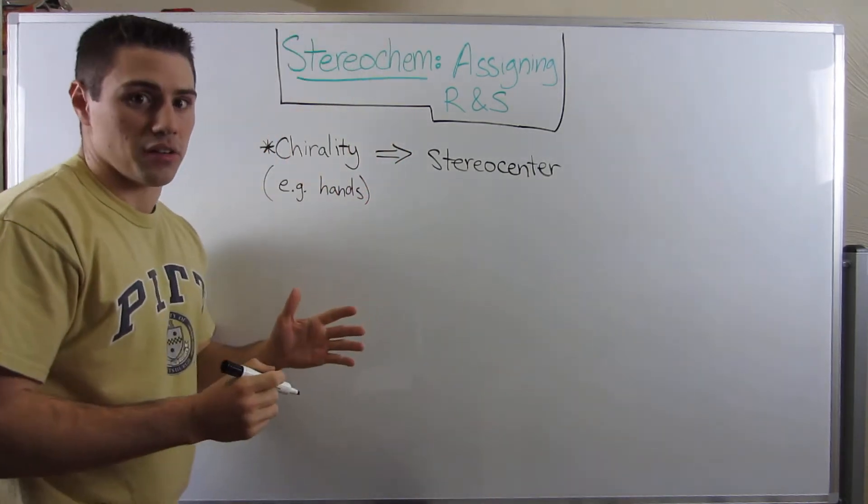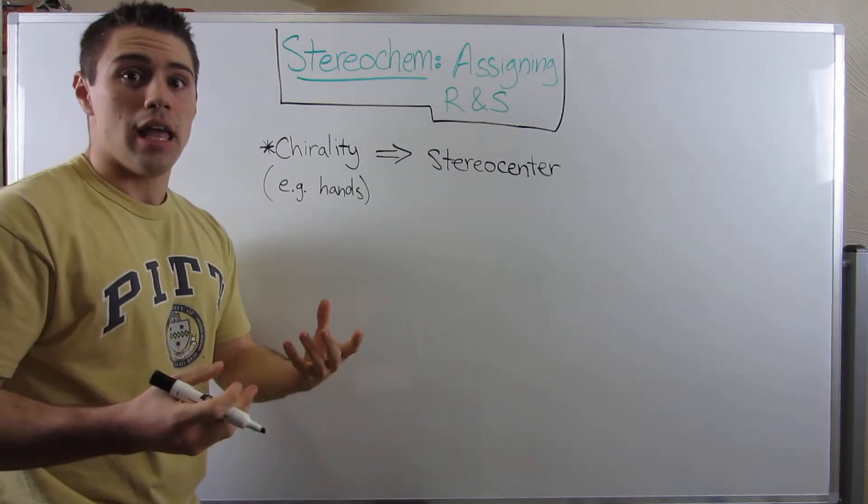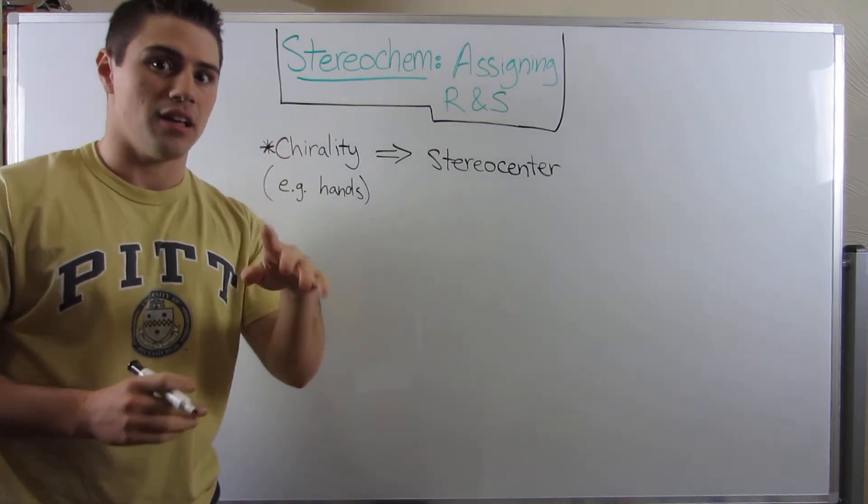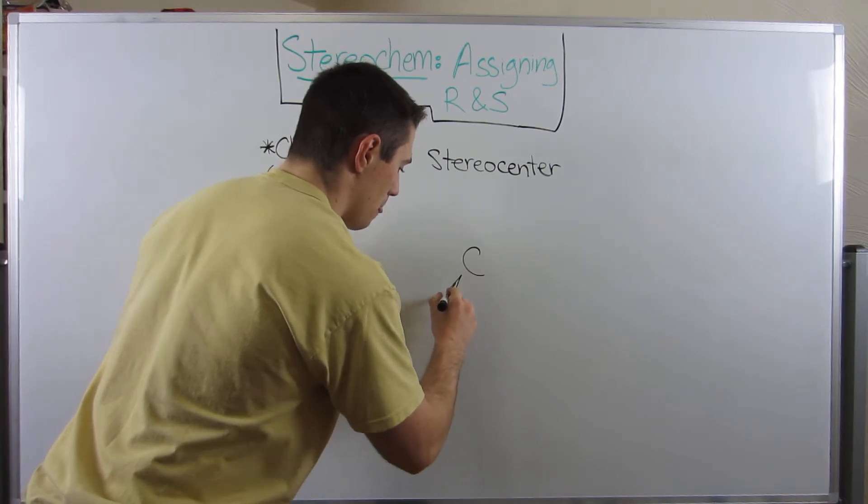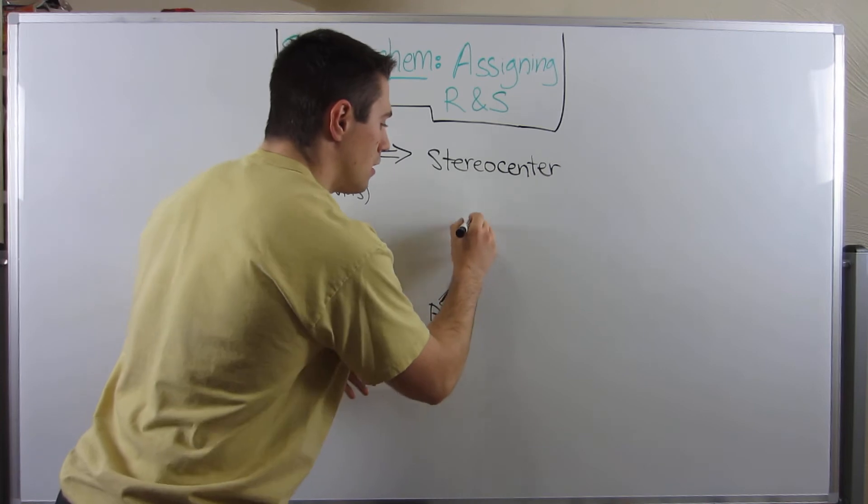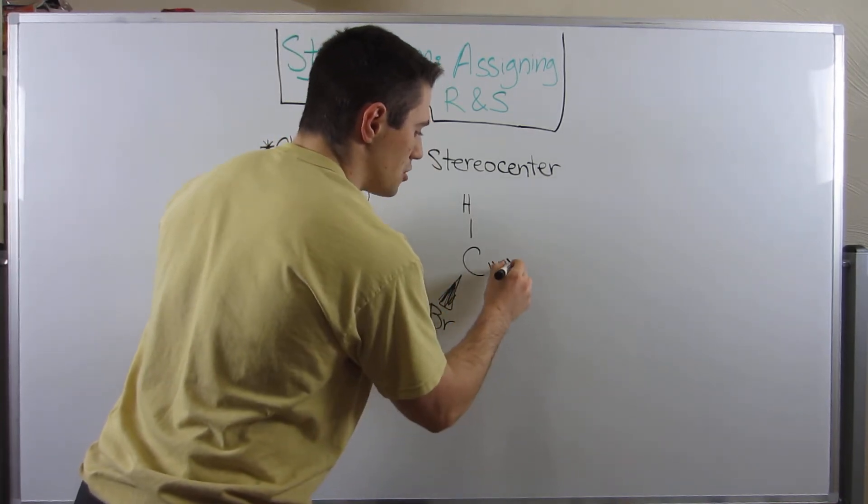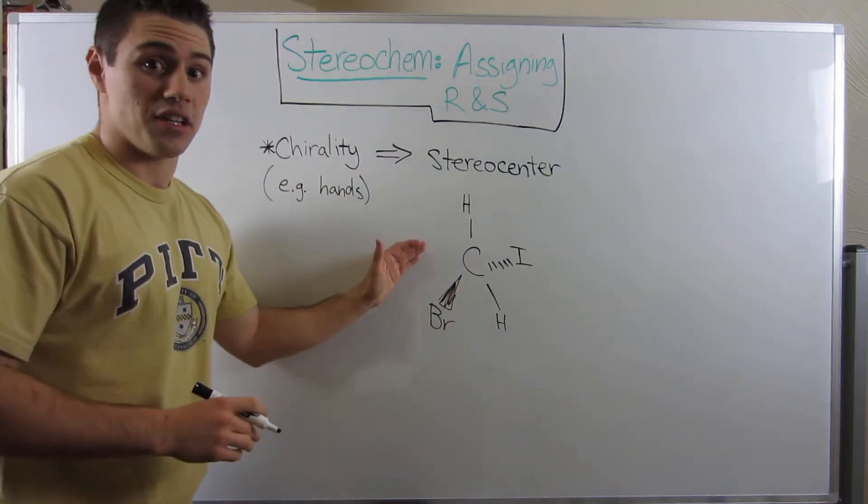So here's what a stereocenter is. A stereocenter is going to be a carbon attached to four different things. And here's what I mean. If I was to draw you guys this example, right here, a wedged bromine, a hydrogen here, a hydrogen here, and I'm going to just dash an iodine over there.